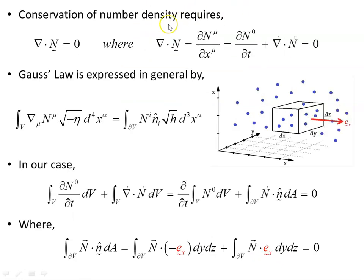Conservation of number density requires that the divergence of the number density 4-vector should be zero. We don't expect anywhere in Minkowski space, as these particles move along, there to be a source or sink of particles. So at any time we care to look there should be the same number of particles. In component form, the divergence is written as dN^mu/dx^mu — the time part plus the spatial part — and all that equals zero.